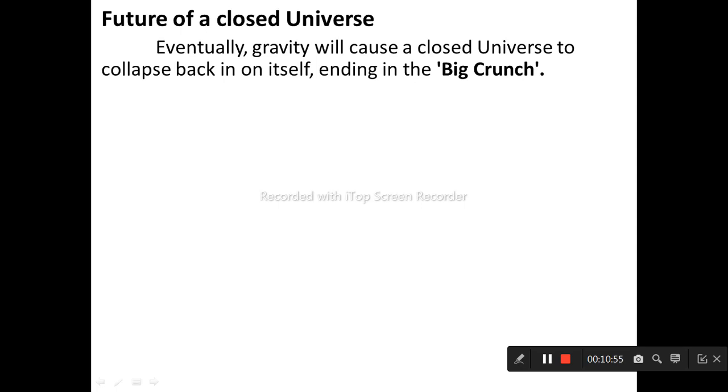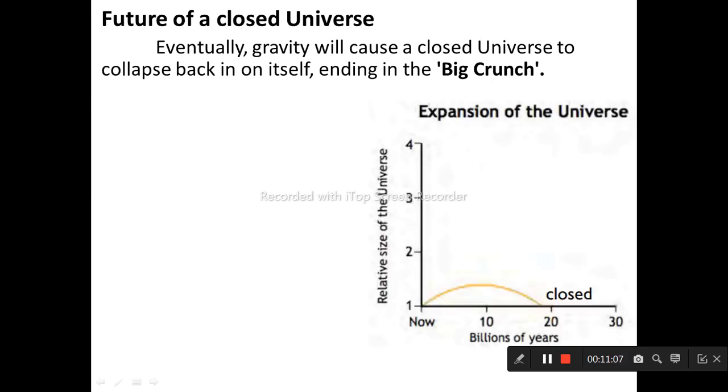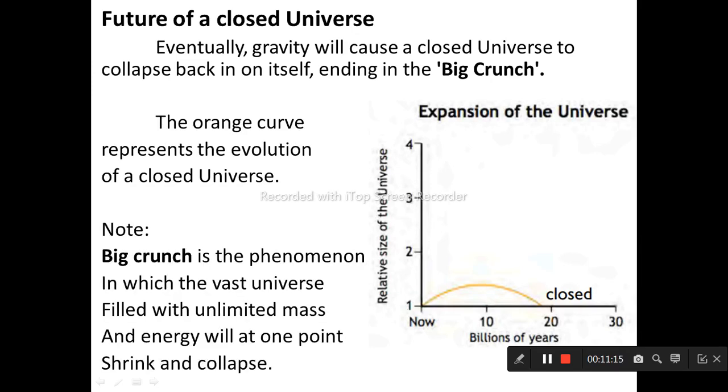Eventually, gravity will cause a closed universe to collapse back in on itself, ending in a Big Crunch. The orange curve represents the evolution of a closed universe. Big Crunch is the phenomenon in which the vast universe filled with unlimited mass and energy will at one point shrink and collapse.